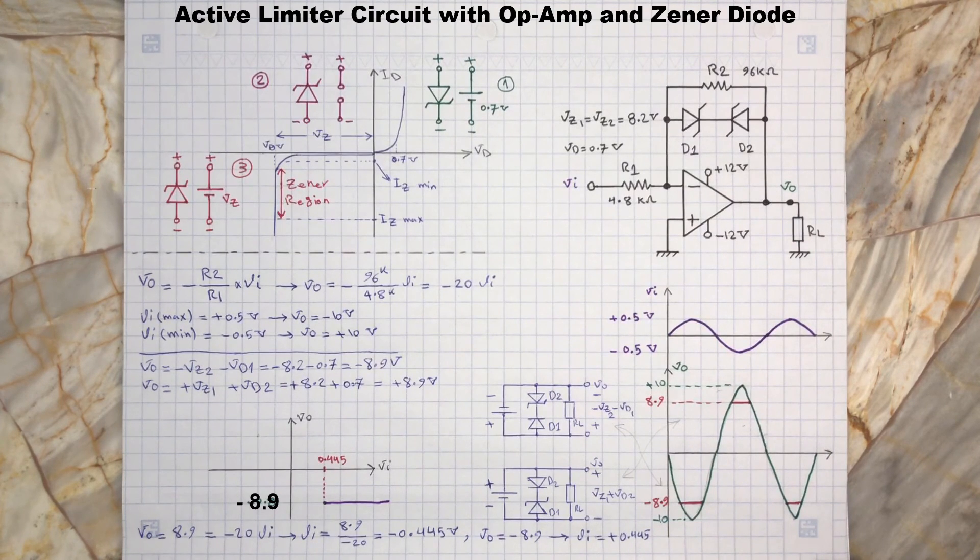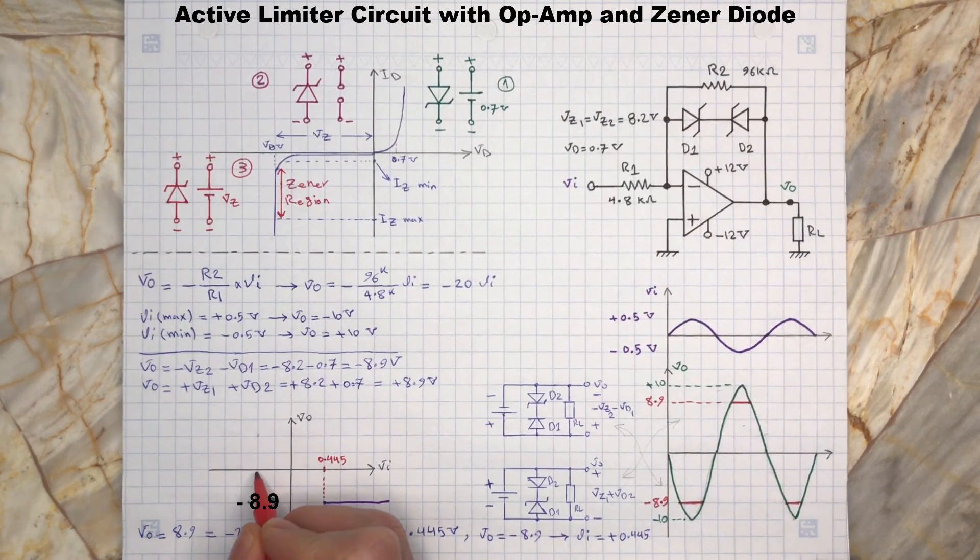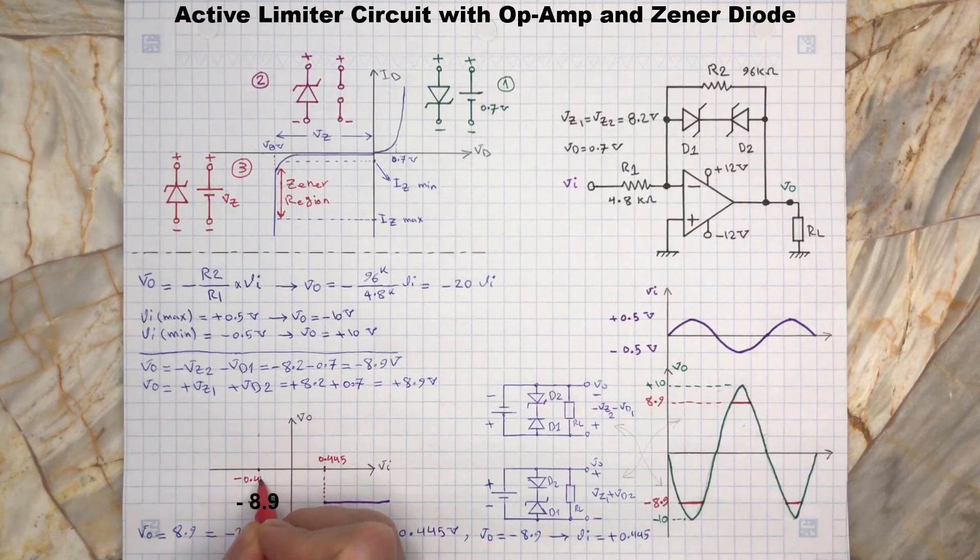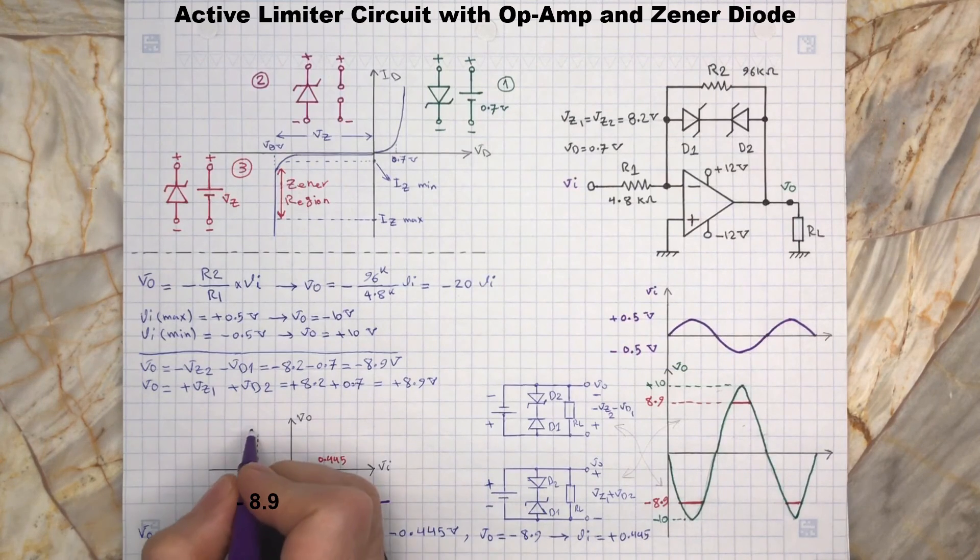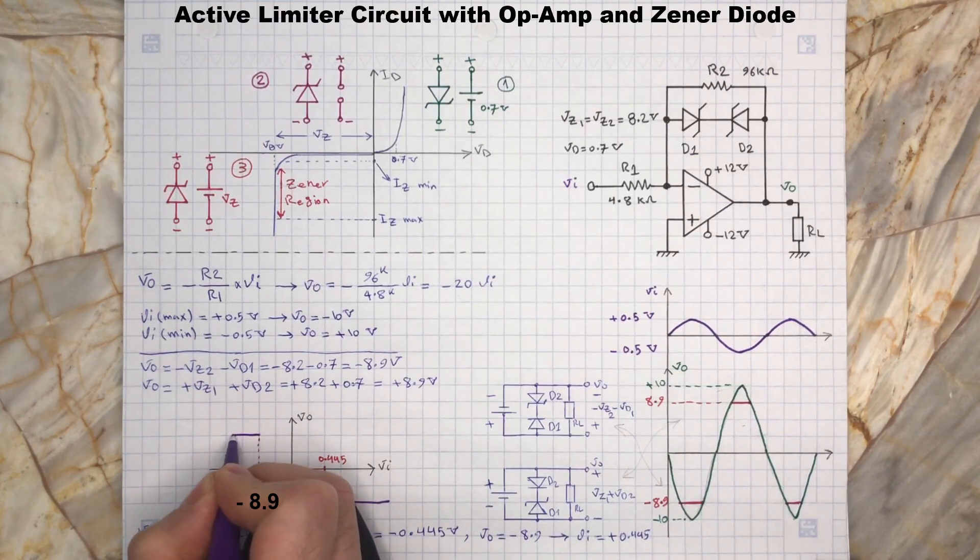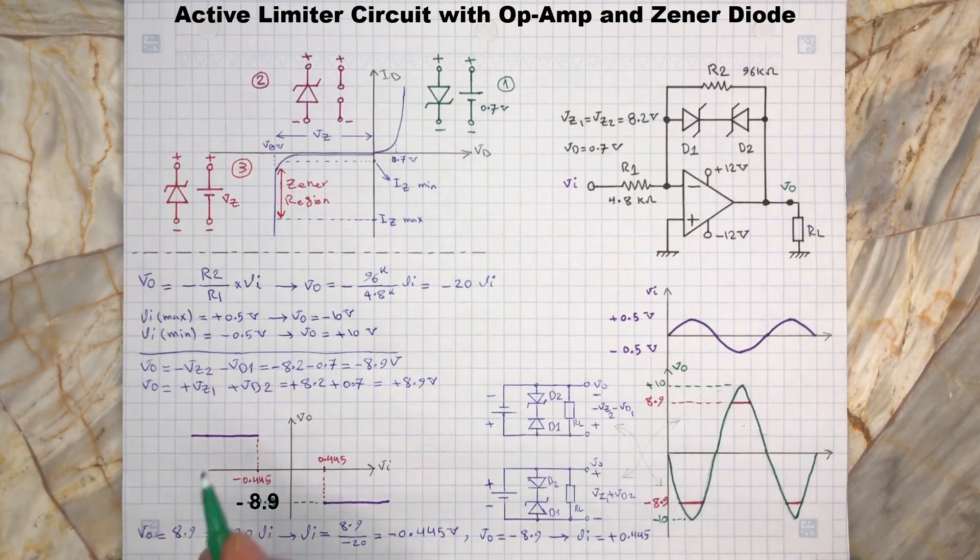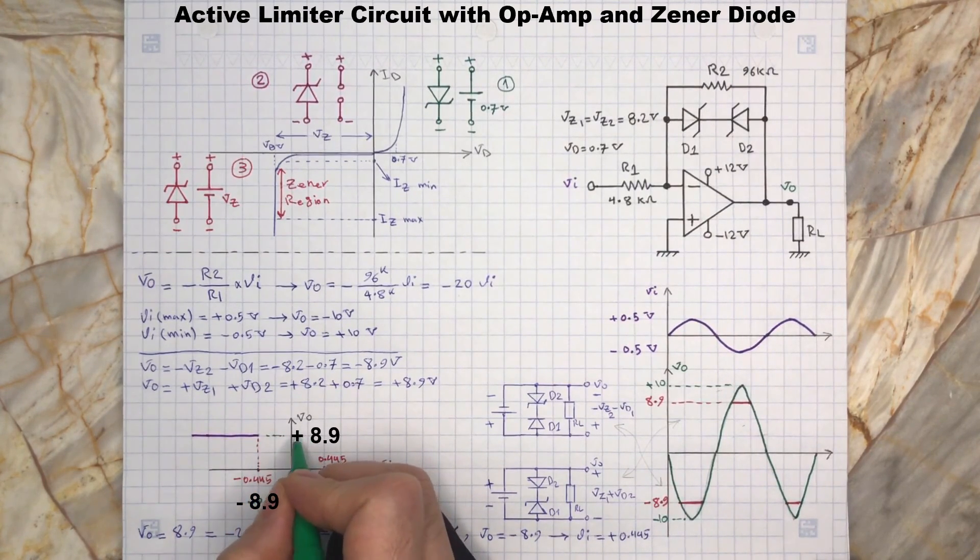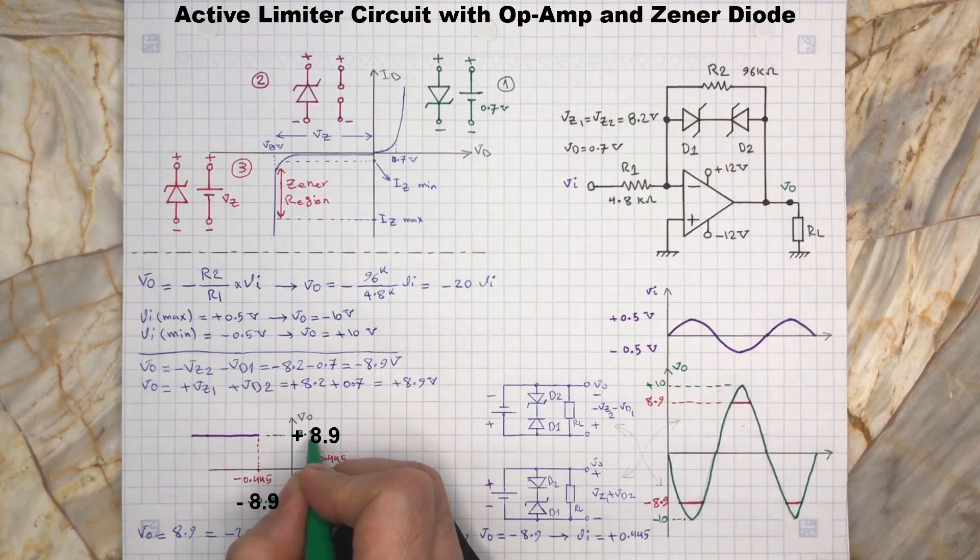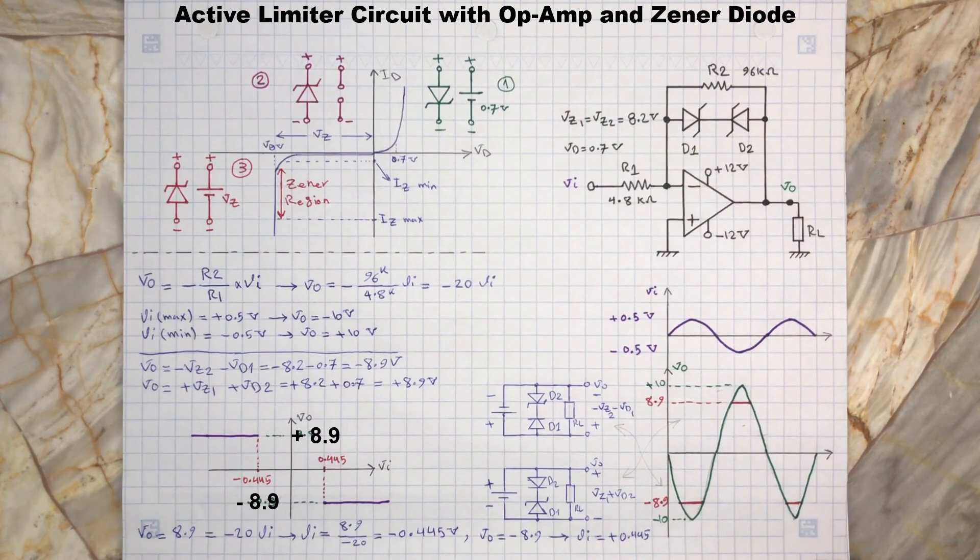When Vi is smaller than minus 0.445 volts, then Vo is positive 8.9 volts. When Vi is between minus 0.445 volts and positive 0.445 volts, then Vo equals...